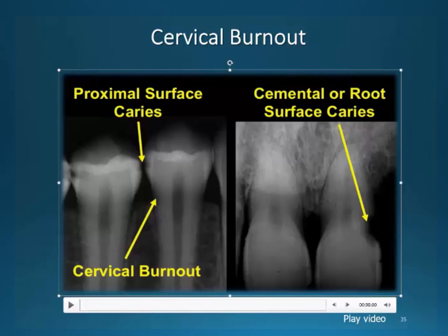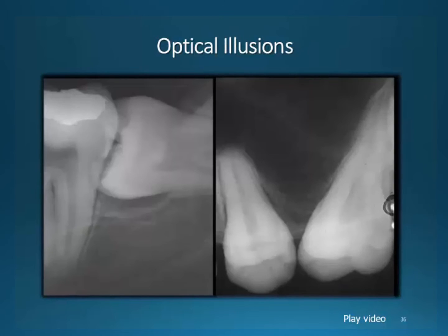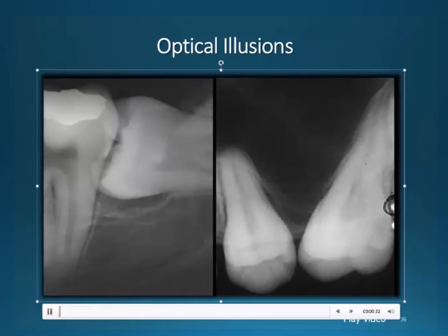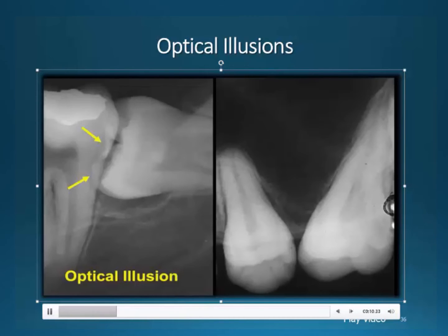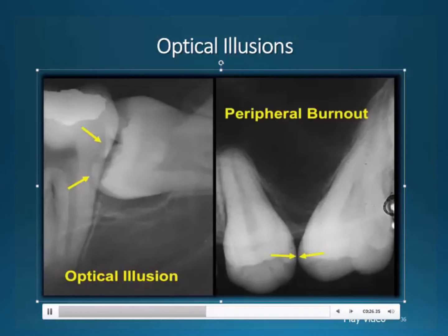When studying the radiographic image of teeth, you need to be aware of two artifacts of imaging. First, when the images of two very dense objects are superimposed, the image of one appears to be outlined with a radiolucent band — this does not represent a loss of tooth structure but is an optical illusion. Second, two objects physically in contact will appear to be separated by a radiolucency, referred to as peripheral burnout. This occurs because the narrow point of contact between the objects allows more x-rays to pass than the adjacent thicker regions of teeth.